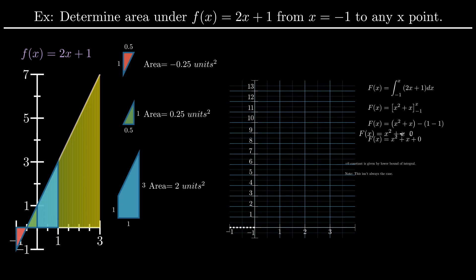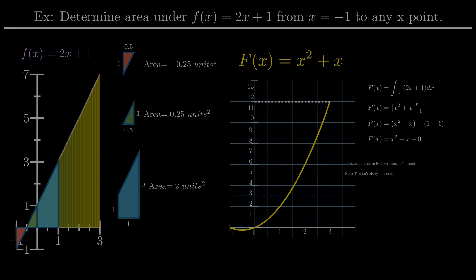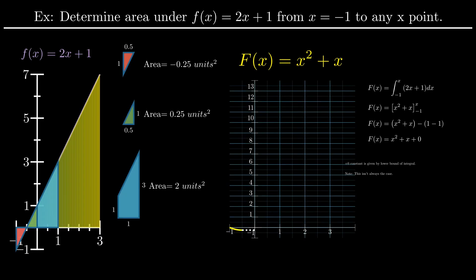When we graph the parabola, the y values are initially negative, as they should be. The y values on the parabola actually represent the exact area under the linear function for any x point from x equals negative 1. Here, let's watch it play out one more time.